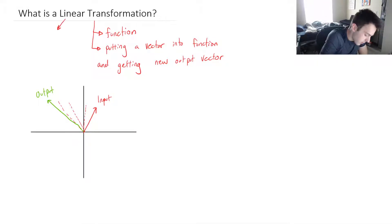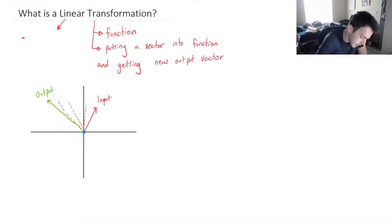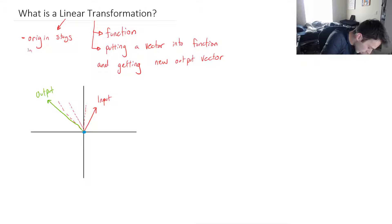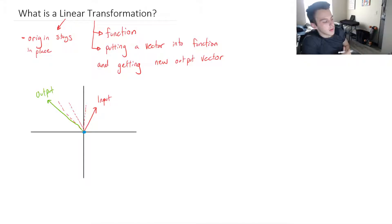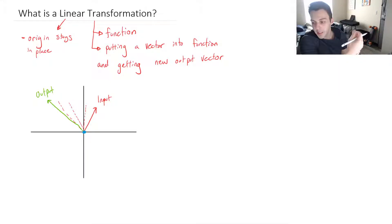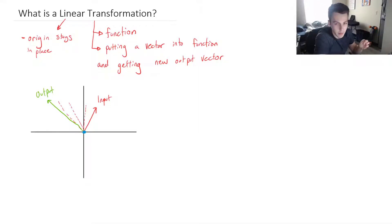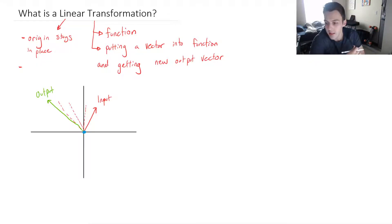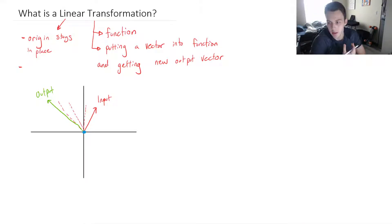Linear basically limits how crazy these transformations can get. One thing that makes a transformation linear is that the origin should stay in its place. Because we're changing all of space, if the origin starts moving around, it's not a linear transformation anymore. Number two is that any straight lines, when transformed, must stay as straight lines — if they don't stay as straight lines, it's not a linear transformation.